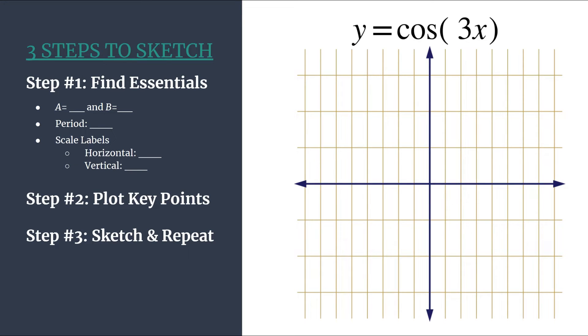We have our method and our grid and we know that this method is for graphs that are in this general form a cosine bx, so these are unshifted cosine graphs. Once we know that we can jump into step one: find the essentials.